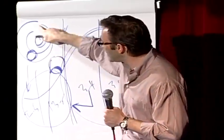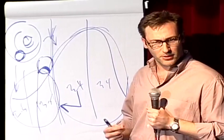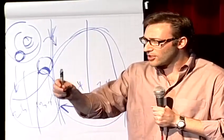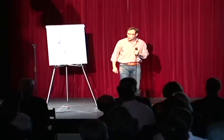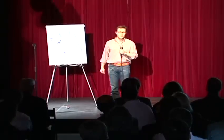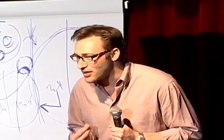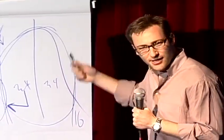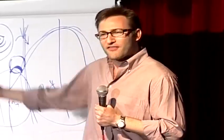He didn't go around telling people what needed to change in America. He went around and told people what he believed. I believe, I believe, I believe, he told people. And people who believed what he believed took his cause and they made it their own, and they told people. And some of those people created structures to get the word out to even more people. And lo and behold, 250,000 people showed up on the right day, on the right time, to hear him speak. How many of them showed up for him? Zero. They showed up for themselves. It's what they believed about America that got them to travel on a bus for eight hours to stand in the sun in Washington in the middle of August. It's what they believed. And it wasn't about black versus white. 25% of the audience was white.